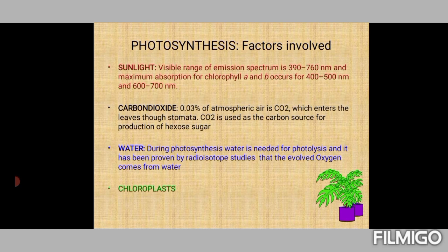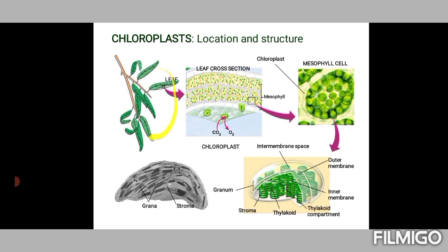The factors involved in photosynthesis: sunlight in the visible range emission spectrum of 390–760 nanometers is used by specific pigments. Chlorophyll a and b utilize solar energy of 400–500 nm wavelength as well as 600–700 nm wavelength. Carbon dioxide — 0.03% of atmospheric air — enters plants through the stomata. Water is absorbed from the soil, and it has been proved by radioisotope studies that the oxygen released actually comes from water.